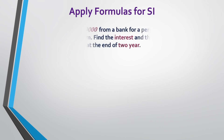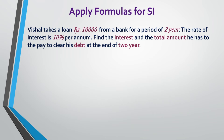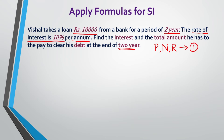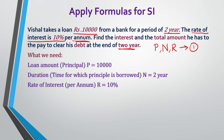Applying formulas for simple interest — let's see an example. Vishal takes a loan of Rs 10,000 from a bank for a period of two years. The rate of interest is 10% per annum. Find the interest and the total amount he has to pay to clear his debt at the end of two years. Our first step is to identify the values given in the question. So: P = Rs 10,000, N = 2 years, and R = 10%.